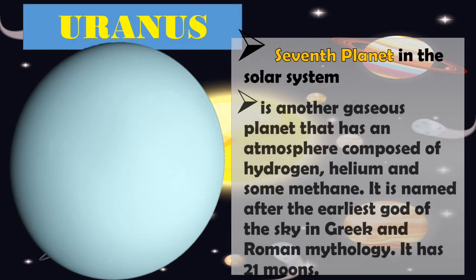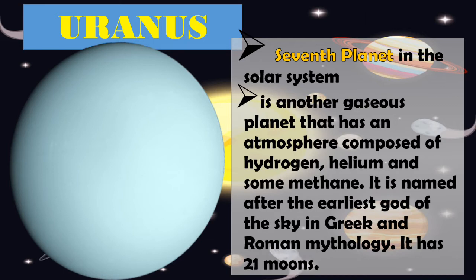Uranus, seventh planet in the solar system, is another gaseous planet that has an atmosphere composed of hydrogen, helium and some methane. It is named after the earliest god of the sky in Greek and Roman mythology. It has 21 moons.